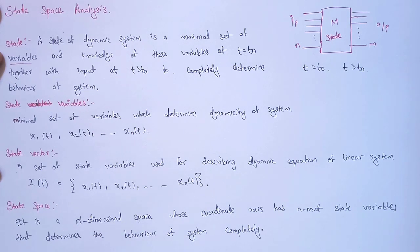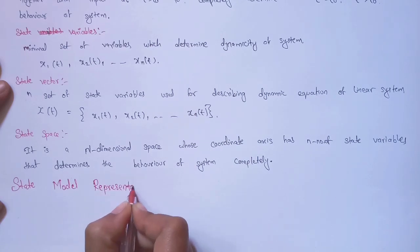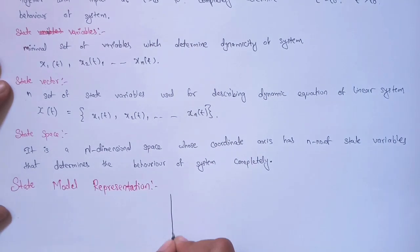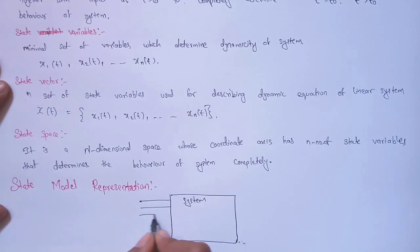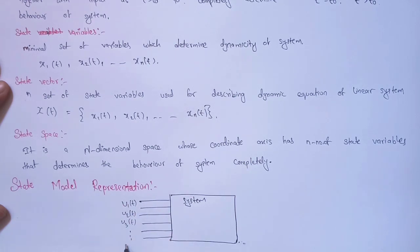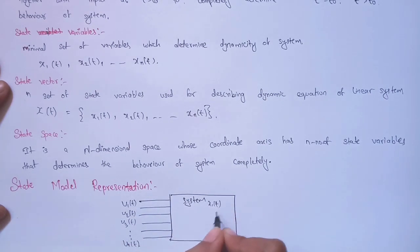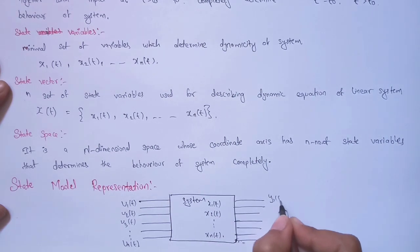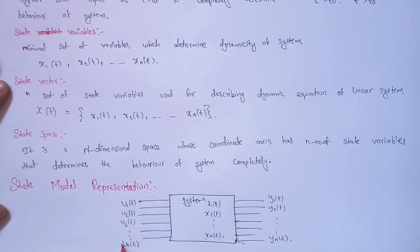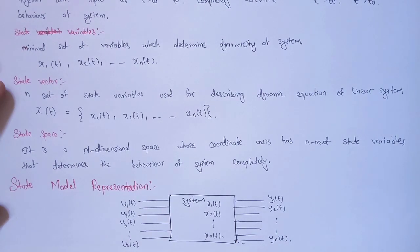Now let's go to the state model representation of a system. For a system, the inputs are denoted not as x but as u1(t), u2(t), u3(t), and so on up to un(t). The state variables inside the system are x1(t), x2(t), and so on up to xn(t), and the outputs are y1(t), y2(t), and so on up to yn(t). So instead of x for input, we use u, and the output is denoted as y(t).